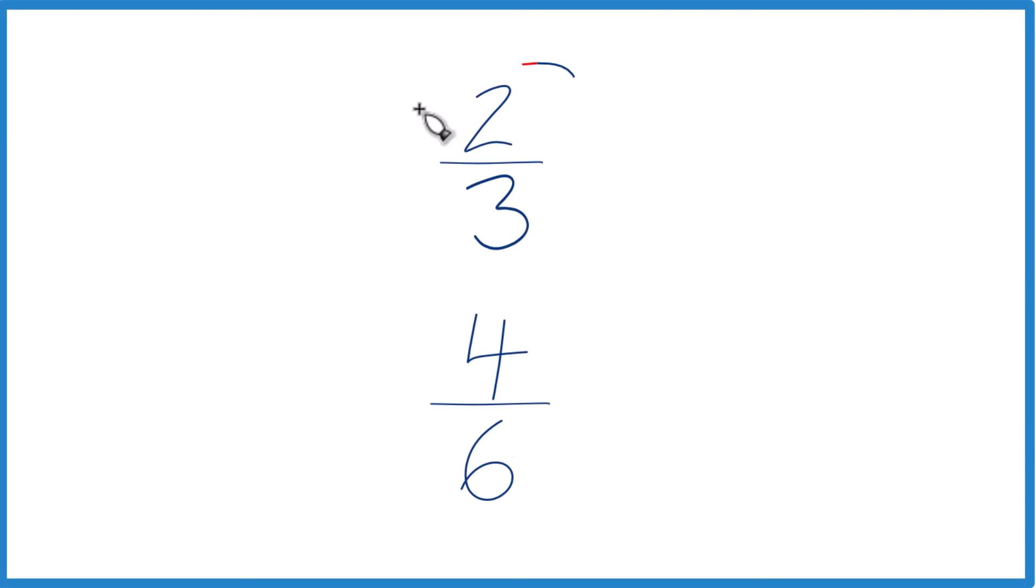So let's figure out whether two-thirds is greater than, equal to, or less than four-sixths. And here's how you do it.